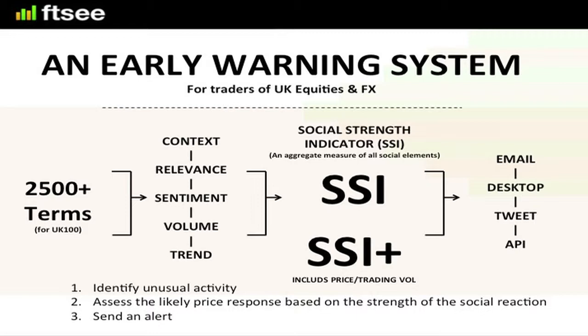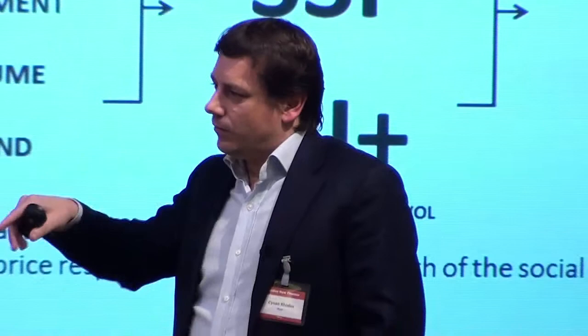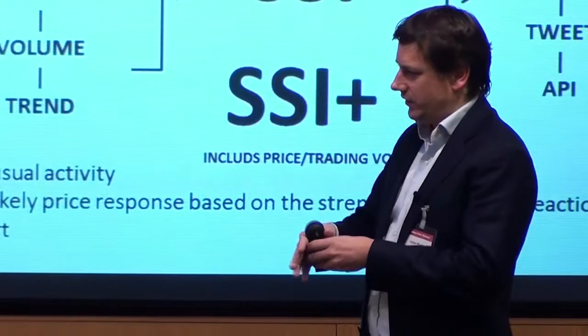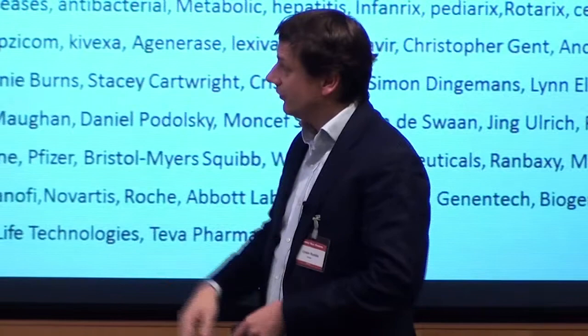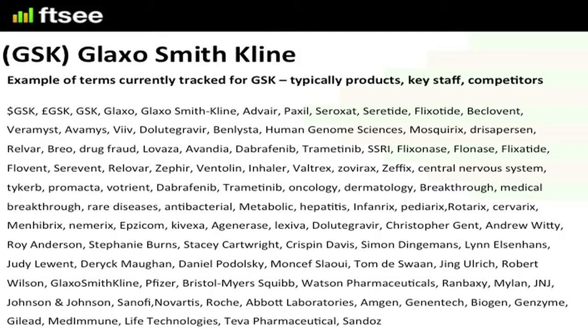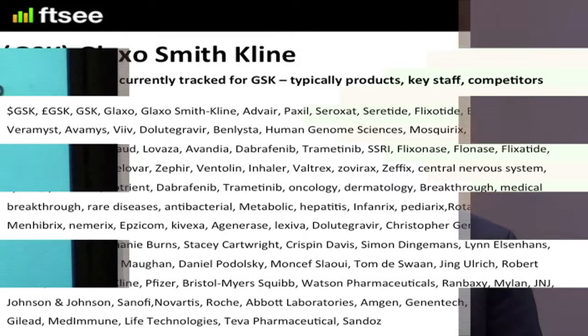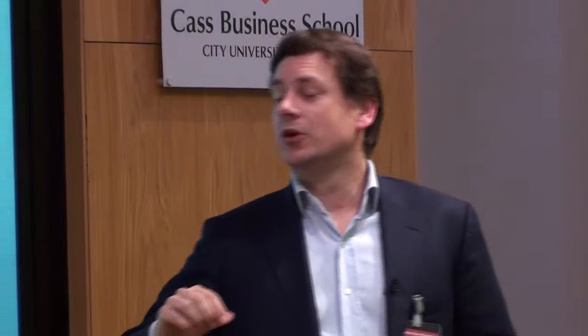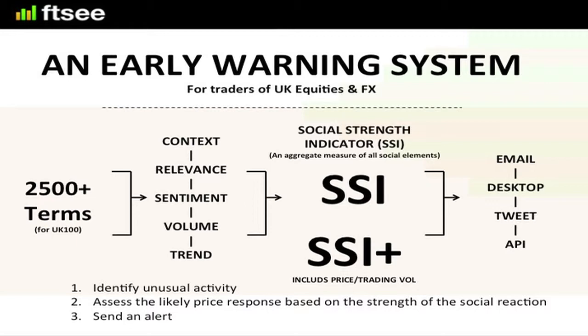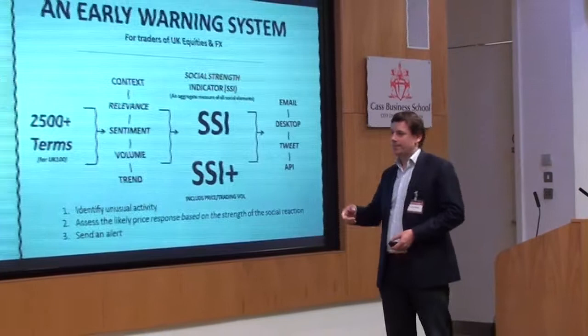Having got over those hurdles, we now have two products — one on the defensive side and one on the offensive side. What we do slightly differently is we don't do sentiment of stock. We essentially take several thousand different terms. For instance, for Glaxo, we track every drug, every board member, anything that we can think of that might actually move the price of Glaxo. We track an awful lot of things, and for each one of those search terms we have a feed of data. We go through the context, the relevance. Sentiment is useful in certain places, and particularly trend — trend is the single most important element of the whole lot.